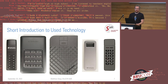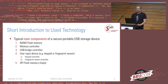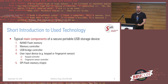Here you can see some of the devices I had a look at this year. Most are by the same manufacturer, Verbatim, and all have one or more security issues we're going to present. The typical main components of secure devices include NAND flash memory, a memory controller, a USB bridge controller, and some kind of user input device depending on the authentication process — either a keypad or a fingerprint sensor — along with a corresponding controller. Sometimes there's also a SPI flash memory chip for storing firmware.